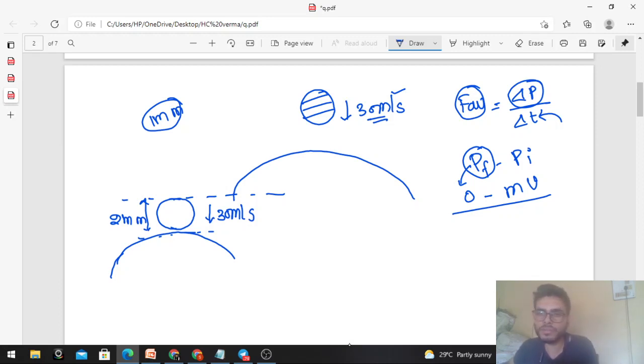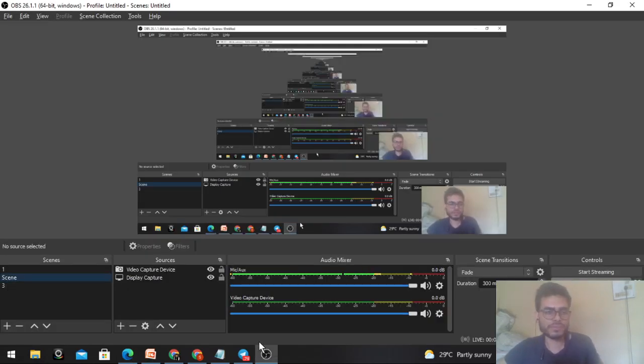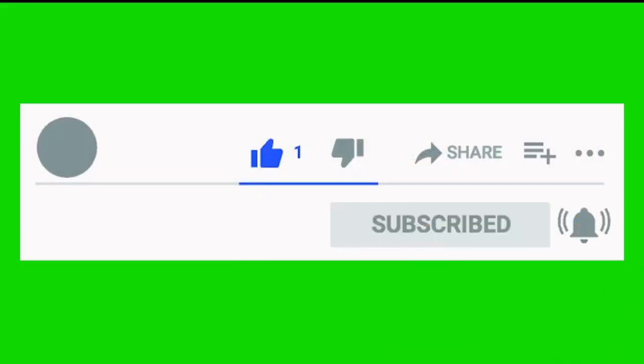How much time? Time will be distance upon speed, which is 2 × 10⁻³, that is the distance, and velocity is 30. You can put this value here and find the value of F average. I hope it's clear. If you have any doubts, we can discuss in the telegram group. The link is in the description. Keep working hard, best of luck, bye.